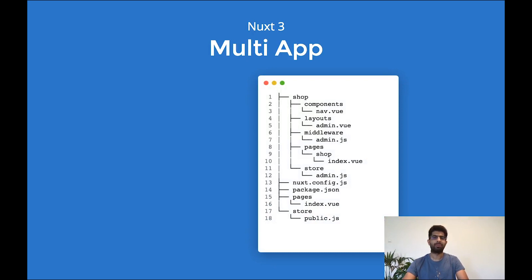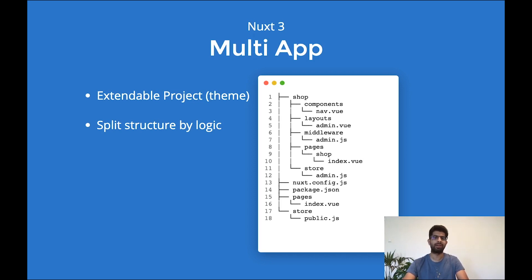We can now finally support multi-app. This has two main use cases. First is extendable projects using themes — if you have a company with different websites based on the same source structure, you can base and extend your website from that theme. This also allows splitting the project by logic: for example, if you have a really big webshop, you can create modules and for each module have a separate pages directory. This is especially useful for projects with lots of components and multiple modules. For Nuxt 2 it was somehow hard to split the logic, but now with multi-app we can split it by functionality.